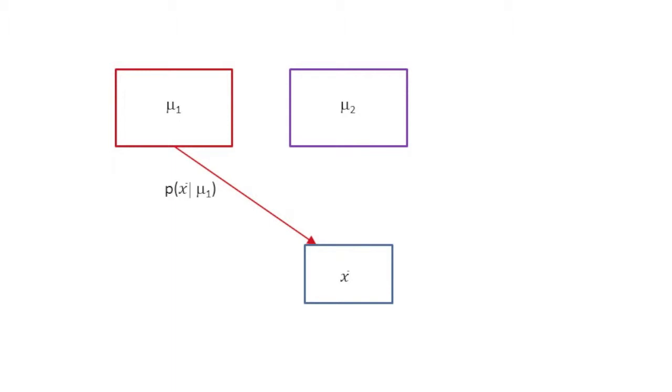If we had another population with mean μ2, then the probability of it producing a sample with a mean X̄ is denoted like this. And for a third population with mean μ3, we write this.